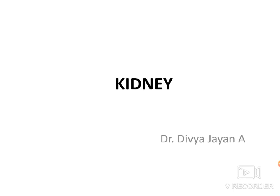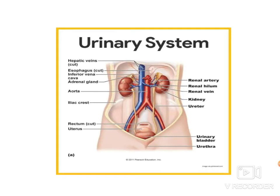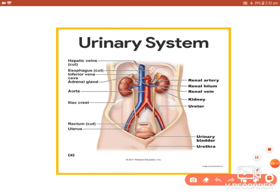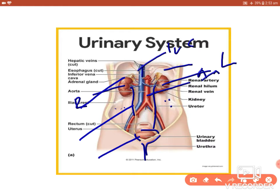In this section, I'll discuss the gross features of the kidney, covering its location, external features, relations, renal fascia, macroscopic structure, and applied anatomy. The urinary system includes the kidney, ureter, urinary bladder, and urethra. From the posterior abdominal wall, we can see the inferior vena cava and abdominal aorta, with the kidneys on each side, and the ureter which opens into the urinary bladder, then the urethra.